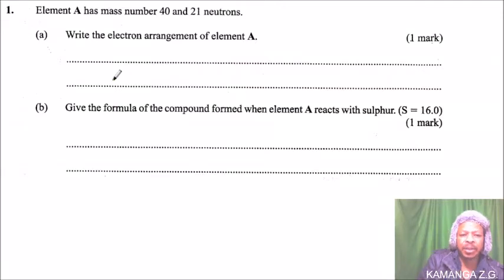This is the first question in this paper. You are told element A has a mass number 40 and 21 neutrons. Part A: write the electronic arrangement of element A. Now we know an atom consists of neutrons, protons, and electrons. The mass number is the sum of the neutrons and protons.